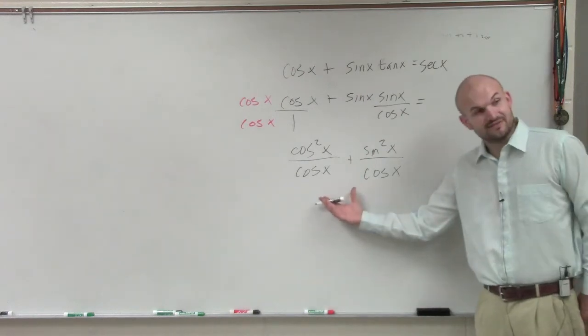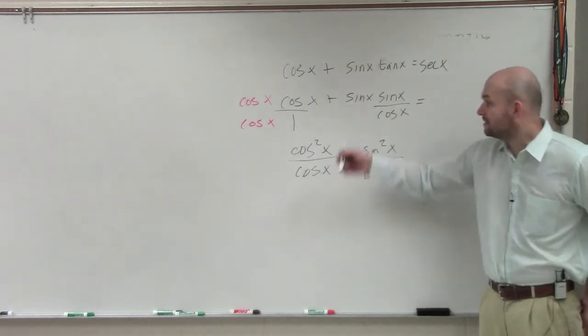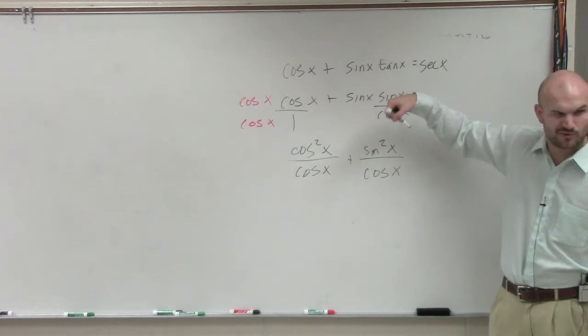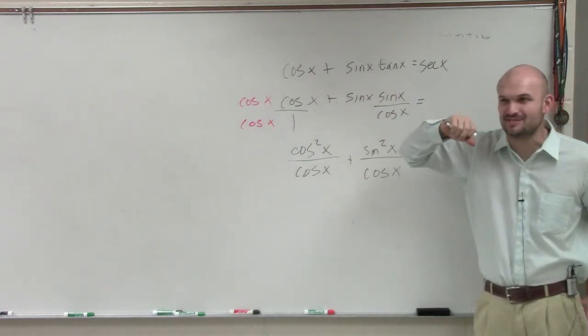Well, what's nice about this is now these have the same denominator. So I can combine them. And then cosine squared plus sine squared, does anybody remember on page 354 what that identity gives us? What value?